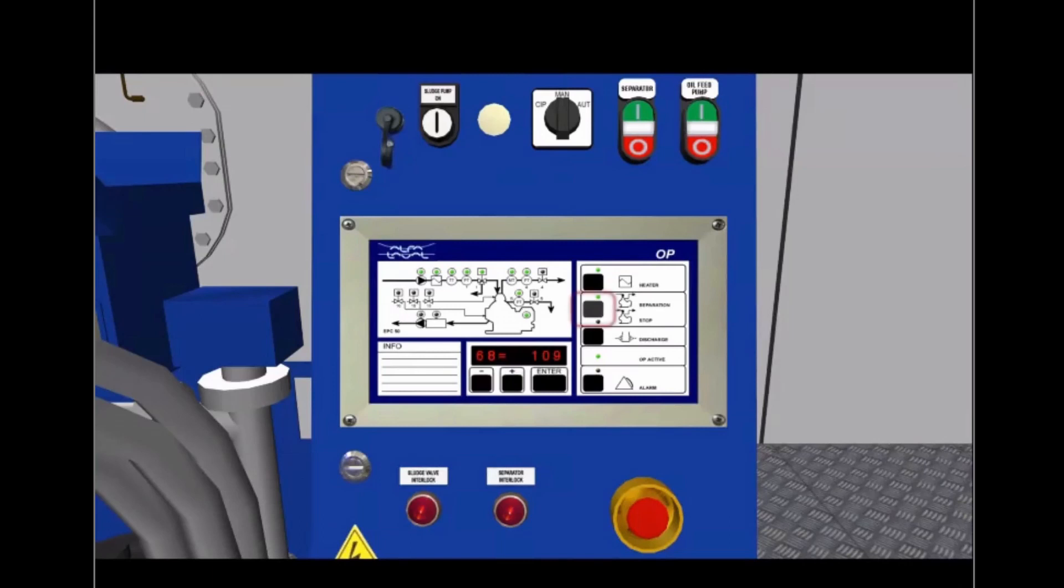To stop the system, push the separation button on the operator panel. The yellow LED for the separator stop sequence starts to flash. A sludge discharge is initiated. The stop sequence LED changes to steady yellow and the green LED for separation system operation goes out. When the sludge discharge is completed, stop is displayed.